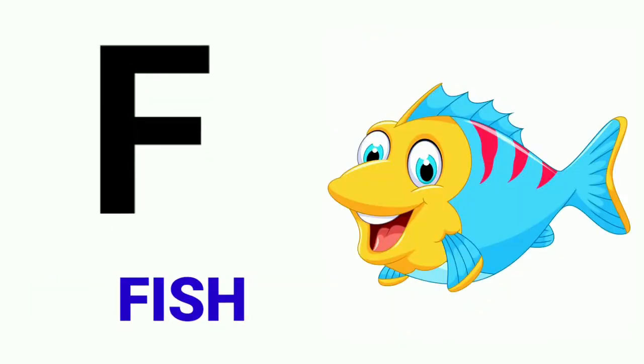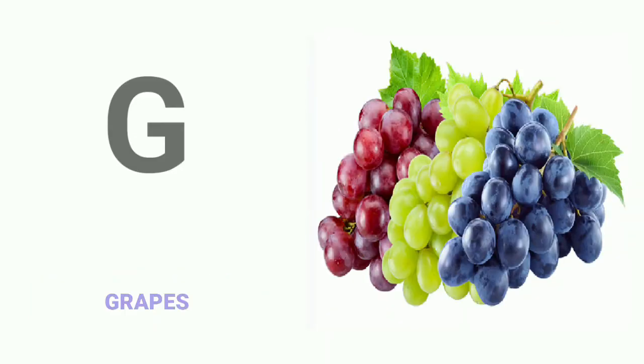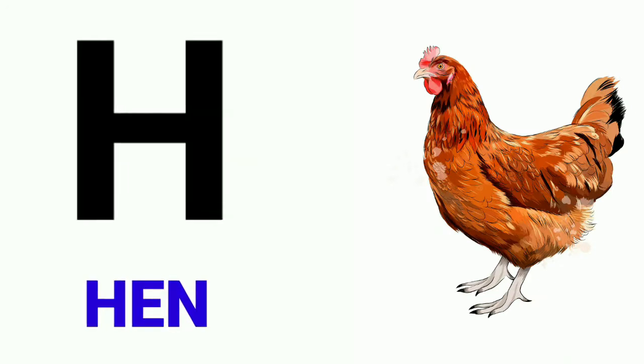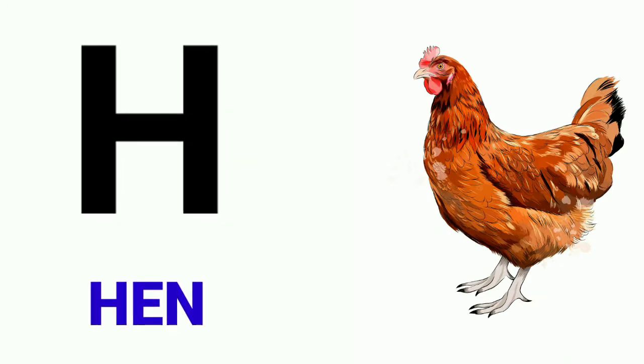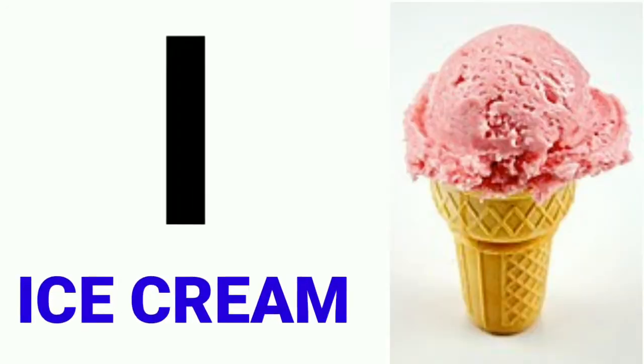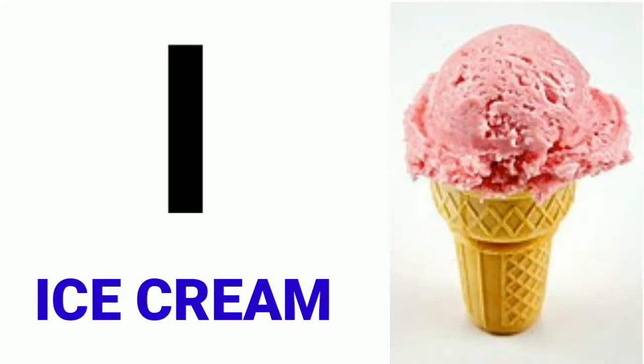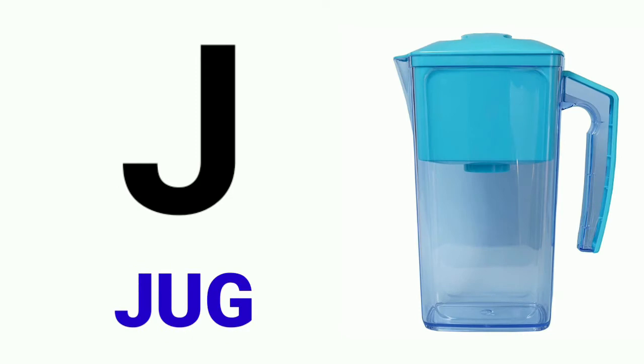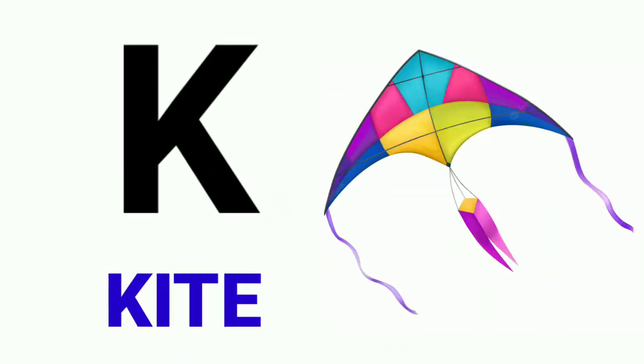F for fish, G for crabs, H for hen, I for ice cream, J for jug, K for kite.